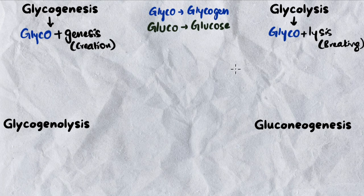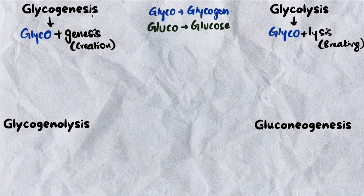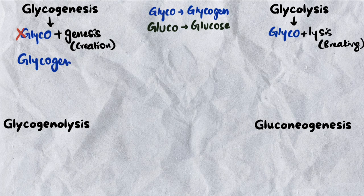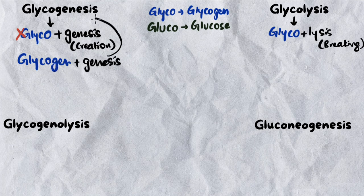I realized what my mistake was. The naming system is actually really more clever than I gave it credit for — I have a newfound appreciation for it. My mistake was: glycogenesis is not 'glyco' plus 'genesis.' The way to think about it is 'glycogen' plus 'genesis,' because glycogen and genesis both share 'gen,' so we combine them and just say 'glycogenesis.'